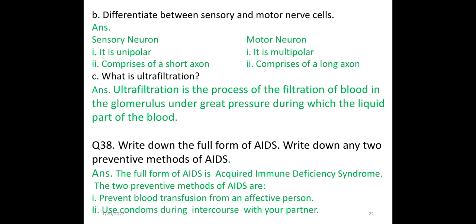Differentiate between sensory and motor nerve cells. Sensory neurons are unipolar while motor neurons are multipolar. Sensory neurons are comprised of short axons, and motor neurons are comprised of long axons.